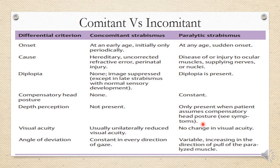Visual acuity is usually unilaterally reduced in concomitant cases — one eye has a higher refractive error or visual anomaly leading to decreased visual acuity. Whereas in paralytic squint, when each eye is tested separately you find no change in visual acuity; the only problem is the paralysis of the muscle or nerve.